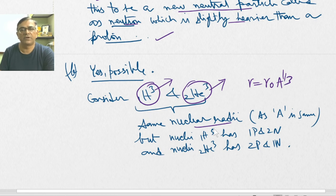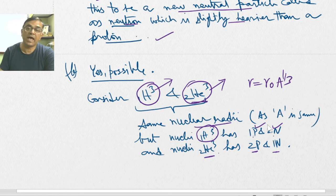If you look at the tritium nucleus, it has one proton and two neutrons. This isotope of helium has two protons and one neutron. Hence, two different nuclei having different numbers of protons and neutrons can have the same nuclear radii. Thank you.